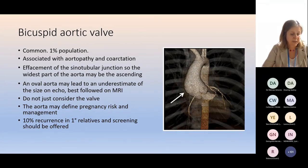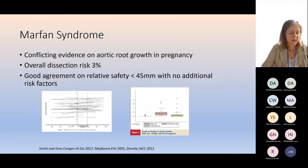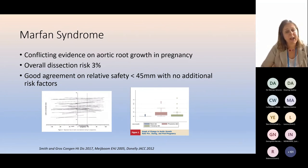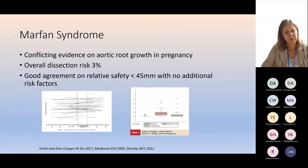With Marfan syndrome, there is conflicting evidence on aortic root growth in pregnancy. The overall dissection risk is about 3%, and the dissection risk is higher for a larger root. There is good agreement on relative safety below 4.5 centimetres, as long as there are no additional risk factors. One study shows aortic root doesn't grow if you become pregnant; another shows it grows more than in non-pregnant women. But the important point is there is a dissection risk higher than background, and there is general agreement that below that level it is safe to proceed with appropriate management as long as there is no malignant family history.